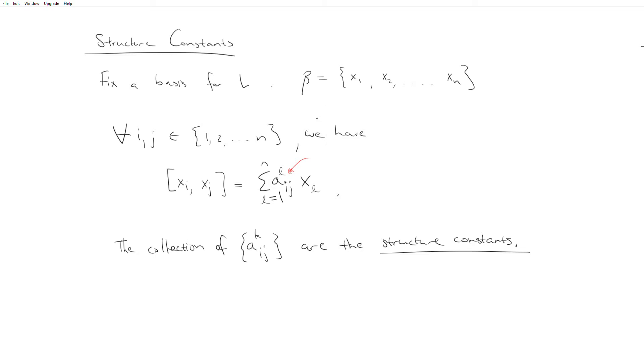And so I hope it's clear here that if you fix a basis, the set of structure constants will be unique. And so going backwards, if you give me a valid set of structure constants, there's only one Lie algebra that can correspond to it up to isomorphism.